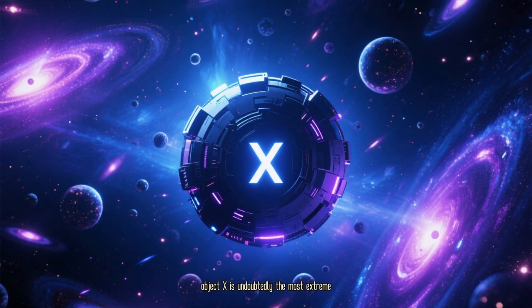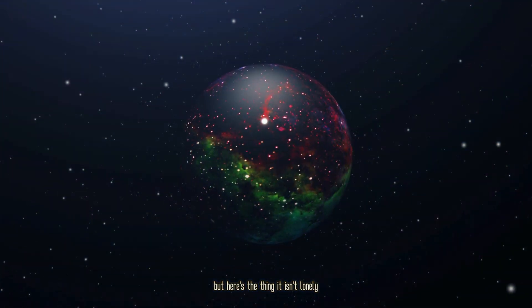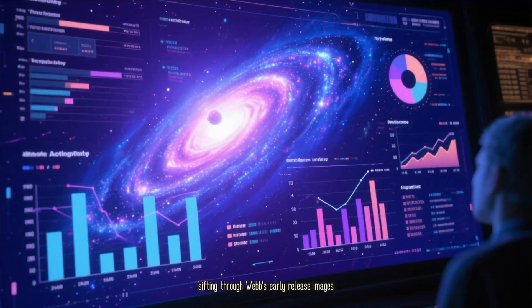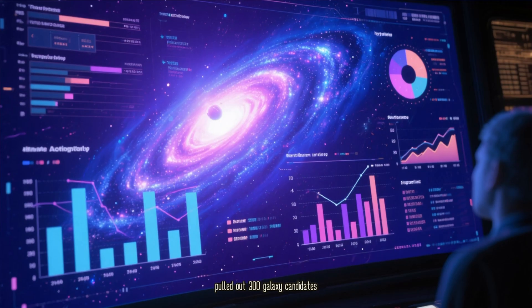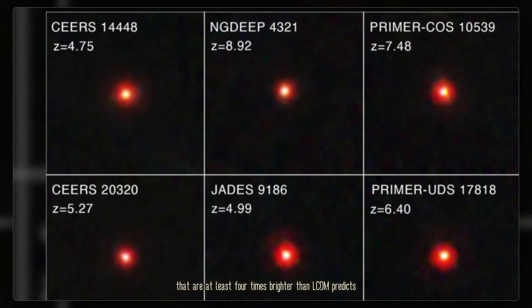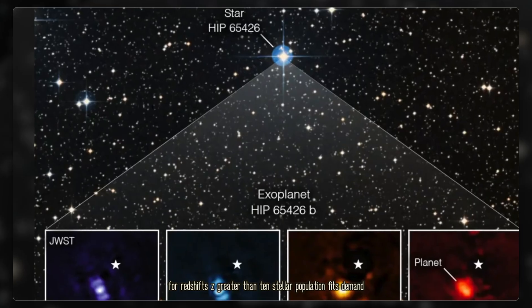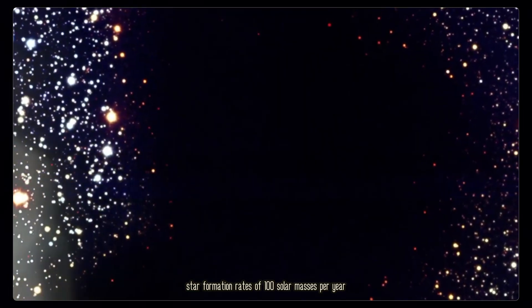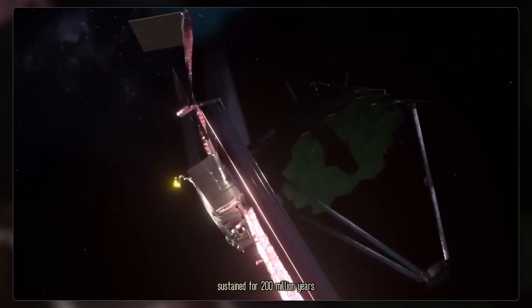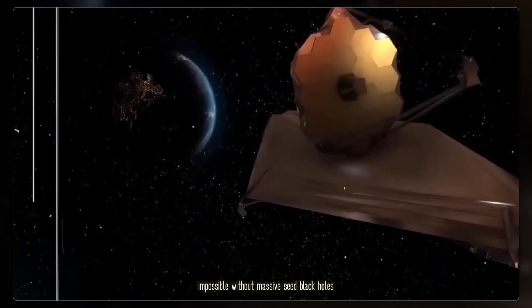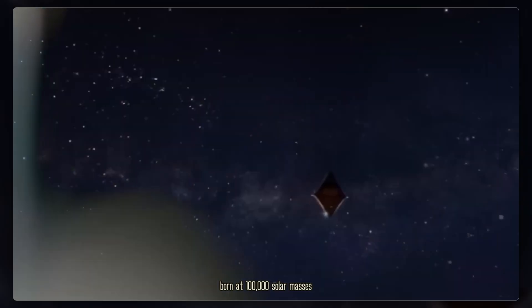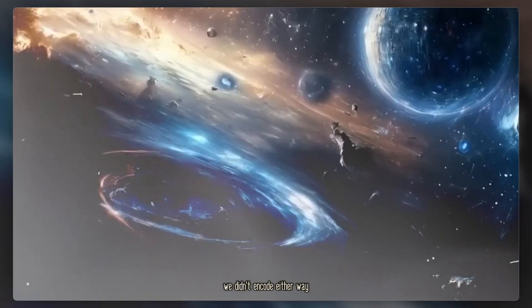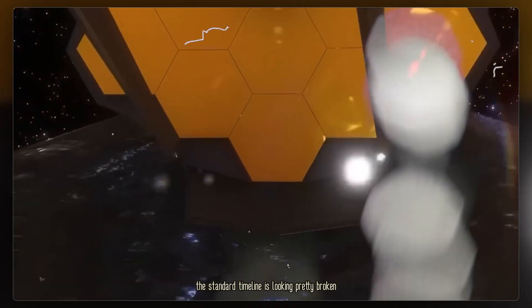Object X is undoubtedly the most extreme, but here's the thing. It isn't lonely, not by a long shot. University of Missouri astronomers, sifting through Webb's early-release images, pulled out 300 galaxy candidates that are at least four times brighter than LCDM predicts for redshifts Z greater than 10. Stellar population fits demand star formation rates of 100 solar masses per year, sustained for 200 million years, impossible without massive seed black holes born at 100,000 solar masses. Either feedback physics is profoundly wrong, or the early universe had a massive head start we didn't encode. Either way, the standard timeline is looking pretty broken.